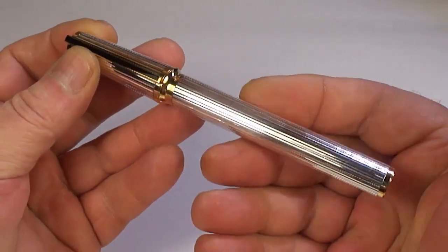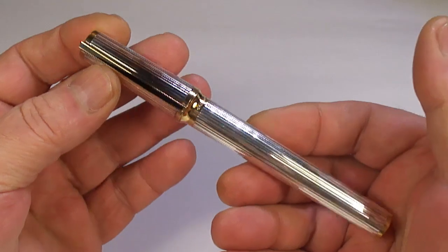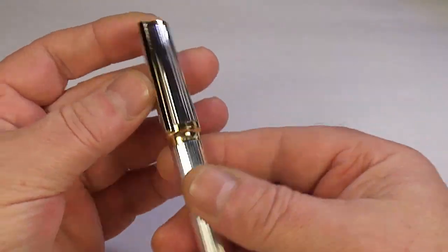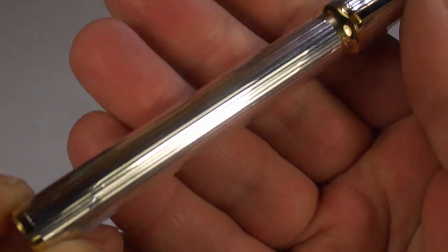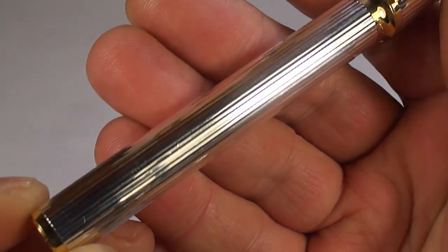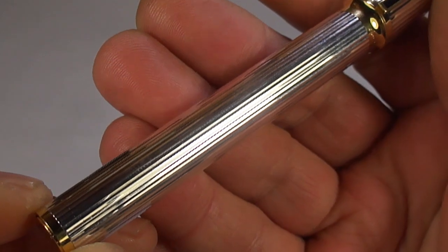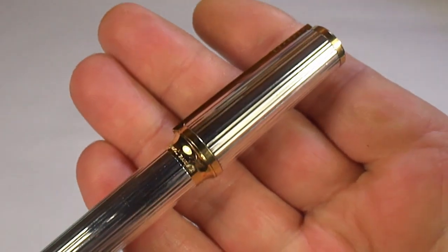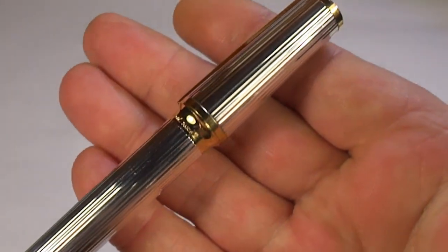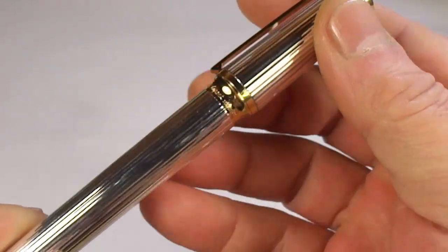Now, hopefully you can see, it comes in this silver engraved godron pattern, and that runs all the way along the barrel and the cap as well.